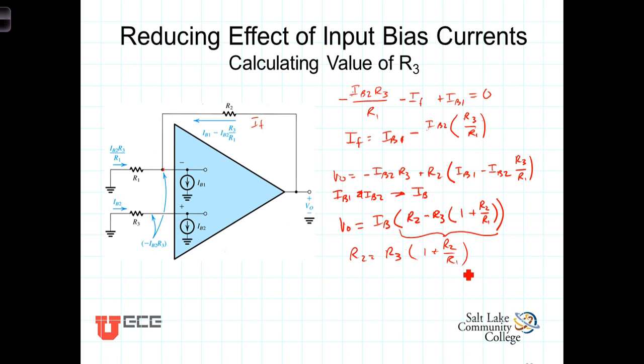Now, solving that for R3, let's do one more step here. Let's put this over a common denominator. So we have R2 is equal to R3 times R1 plus R2 over R1. Now, when we solve for R3, it's obvious that we get R3 is equal to R1 R2 over R1 plus R2.